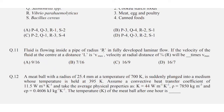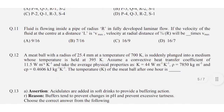Question number eleven: fluid is flowing inside a pipe of radius R in fully developed laminar flow. If the velocity at the center is V_max, the velocity at a radial distance of three-quarters R will be some factor times V_max. Option B is correct: 7 upon 16. Question number twelve is a numerical type question and the correct answer is 472 to 475.